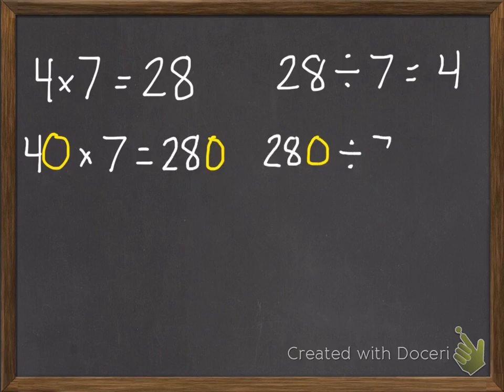Same for division. If we have 280 divided by 7, our 280 is 10 times greater than 28, so our answer is also going to be 10 times greater than 4, so 40.